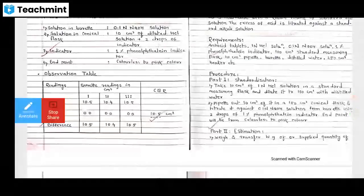Firstly, take 10 cm³ (10 ml) of 1 normal NaOH solution in the standard measuring flask and dilute it to 100 cm³ with distilled water. Then pipette out 10 cm³ of it in a 150 cm³ conical flask and titrate against 0.1 normal HCl solution from the burette using two drops of phenolphthalein indicator.